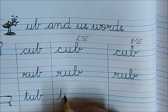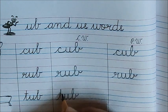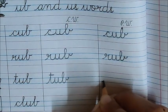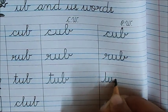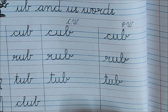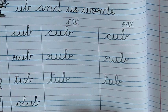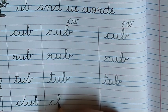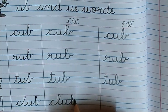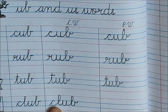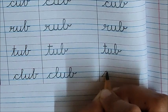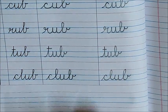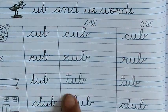Next word is tub. T, U, B, tub. Don't forget to put dash for letter T. One more time we have to write. T, U, B, tub. Children, if you will say and write, then you will become excellent readers. Club. C, L, U, B, club. See, it has four sounds. Let us write it one more time. C, L, U, B, club. See children, we just wrote cub, rub, tub, club.